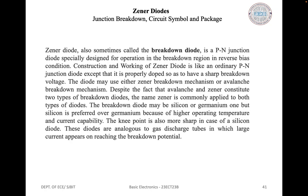The reverse current returns to its normal level when the voltage is reduced below the reverse breakdown level. Diodes designed for operation in reverse breakdown are found to have a breakdown voltage that remains extremely stable over a wide range of current levels. This property gives the breakdown diode many useful applications as voltage reference sources.